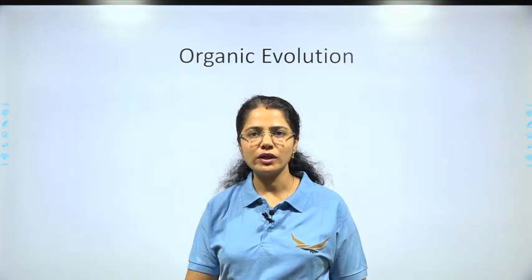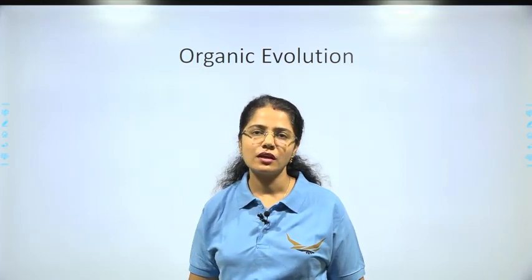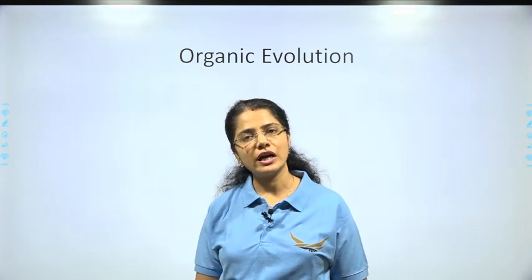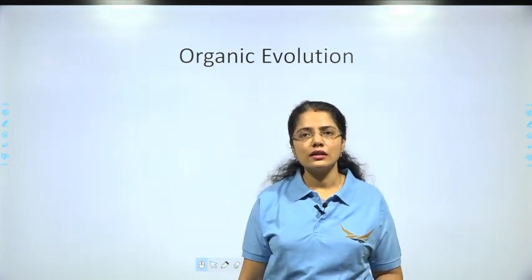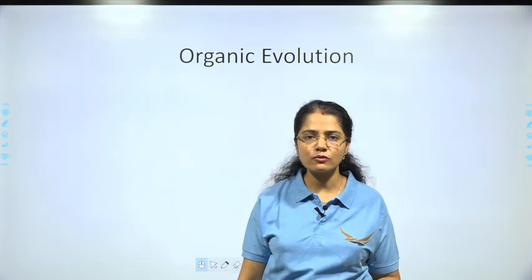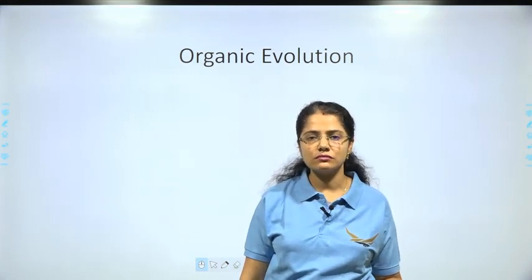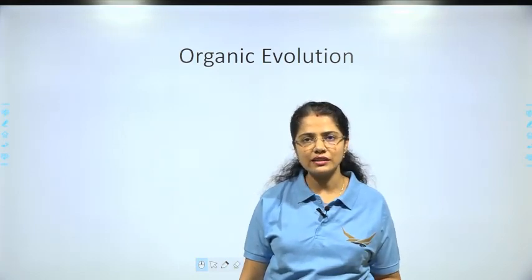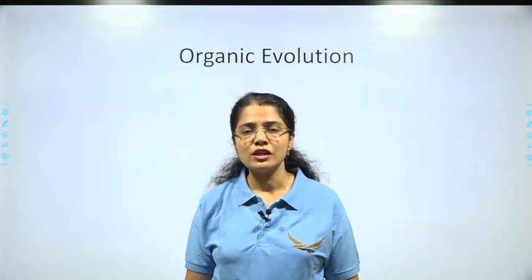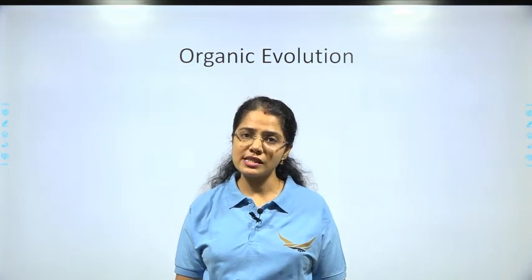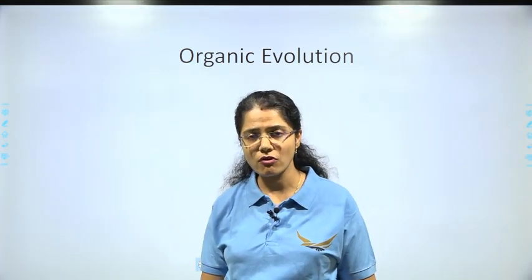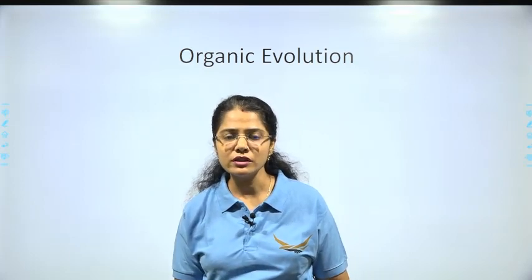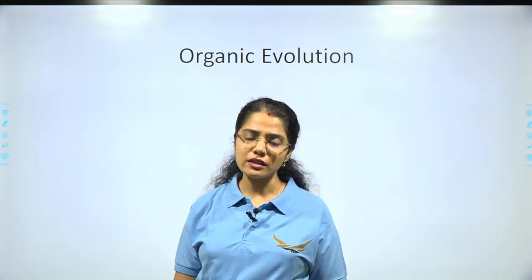Jai Bharat everyone and welcome to Advait Achievers. In our previous video, we finished discussing the modern theory of evolution, chemogeny and the experimental proof of the theory proposed by Operin and Helden — that experimental proof in the form of Uri and Miller's experiment. In this video, we are going to discuss about organic evolution and the evidences of evolution.